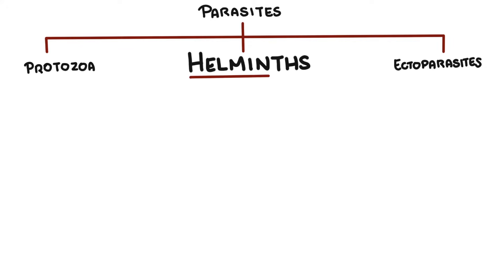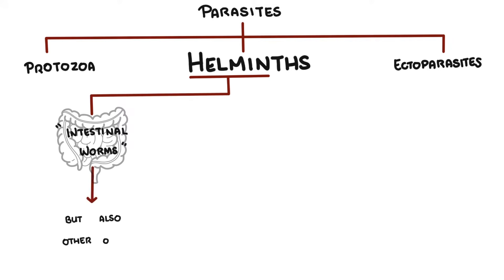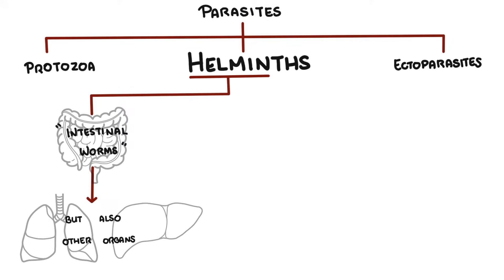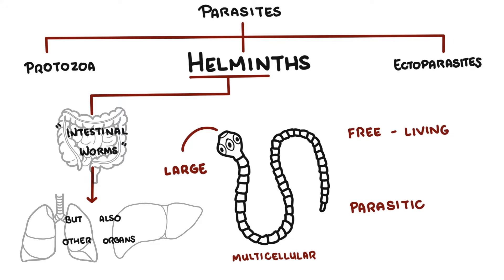Helminths comes from the Greek word 'helmins,' which means intestinal worm. Today, they refer to worms that not only cause problems in the intestines, but also other organs such as the lungs and the liver. Helminths are large, multicellular organisms that are generally visible to the naked eye in their adult stage. Like protozoa, helminths can be either free-living or parasitic in nature, meaning they could live in the environment or they can infect humans.